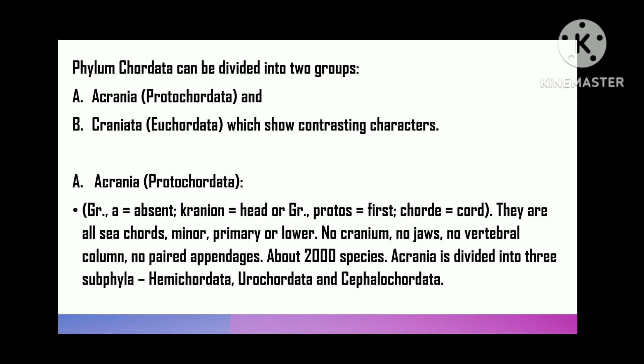Phylum Chordata can be divided into two groups: first, Acrania (that is Protochordata), and second, Craniata (that is Euchordata), with contrasting characters. Acrania — 'a' means absent, 'cranium' means head; 'protos' means first, 'chord' means chord. All are marine, small, primitive or lower chordates with no cranium, no jaws, no vertebral column, and no paired appendages. About 2000 species are there.